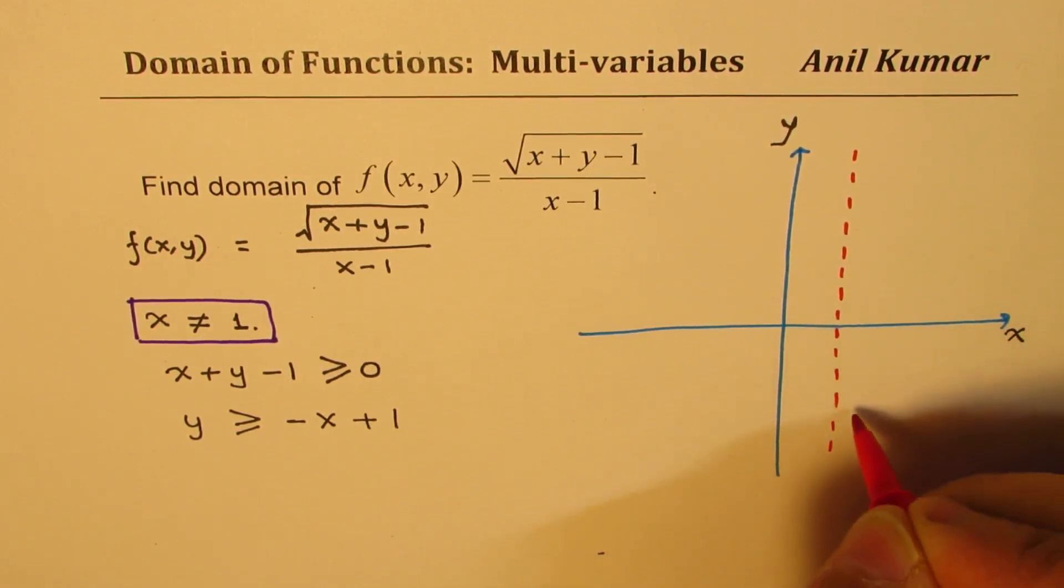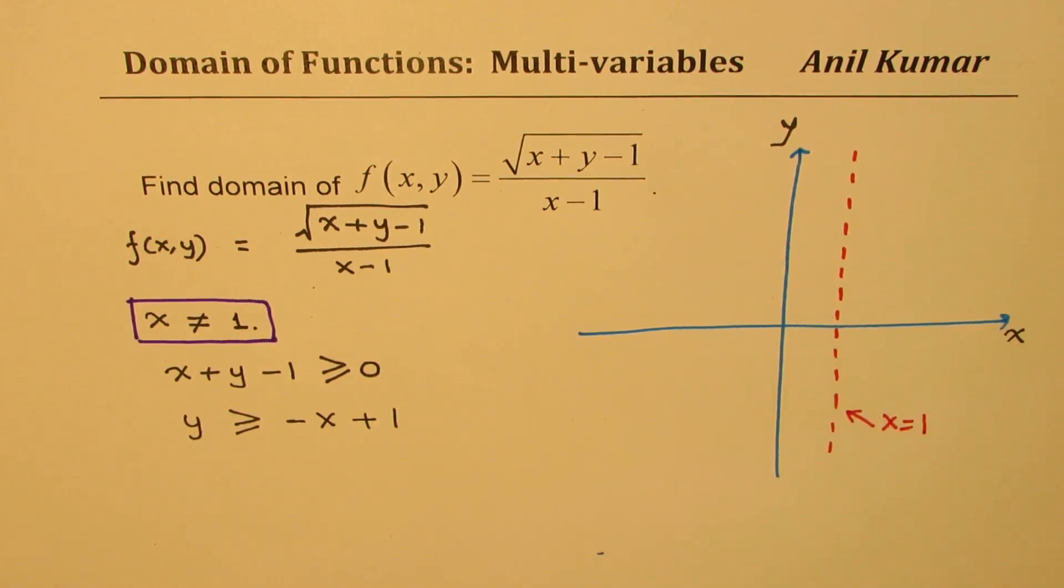So I'm just drawing a red line here saying that those are not permitted at all. So this is what we are saying, x is equal to 1. So that is not permitted.